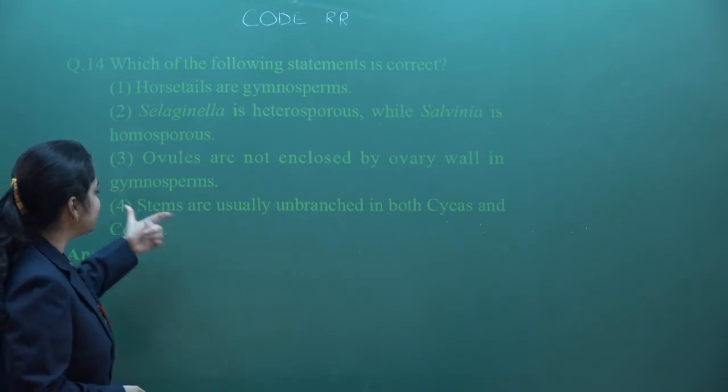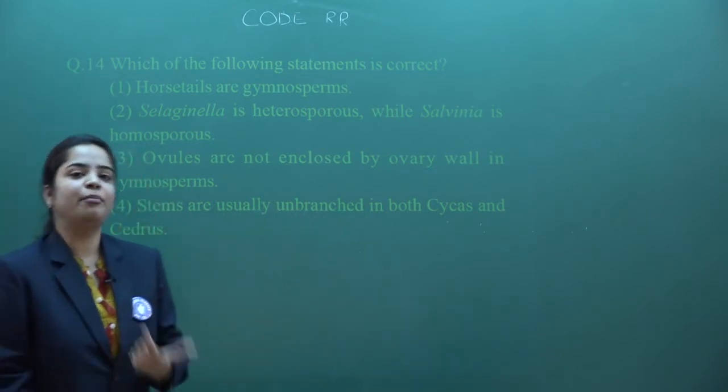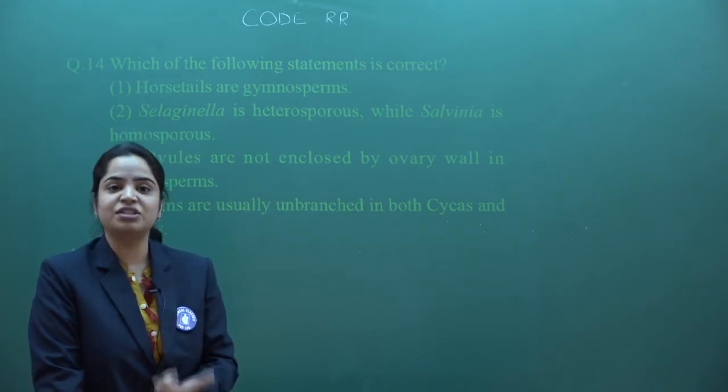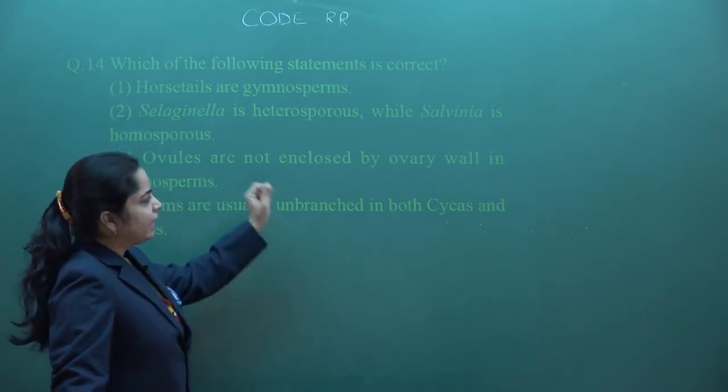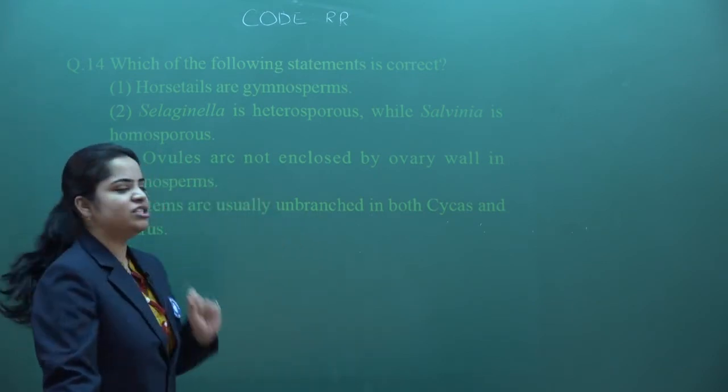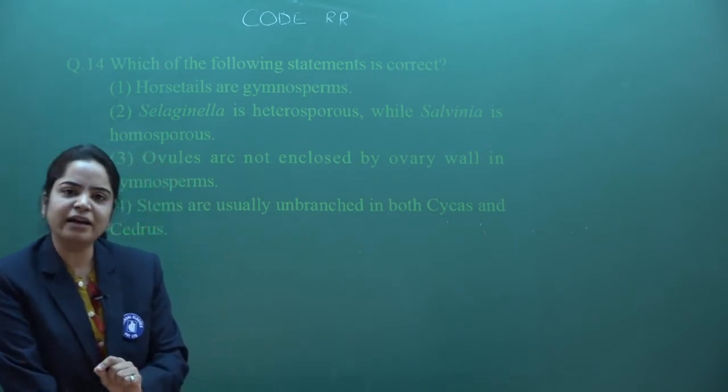The fourth statement is stems are usually unbranched in both Cycas and Cedrus. That's also not correct - they are actually branched. The third statement is ovules are not enclosed by ovary wall in gymnosperm. This statement is absolutely correct.